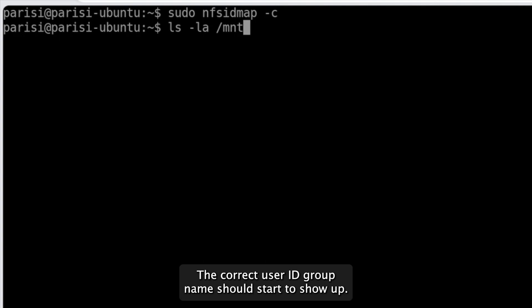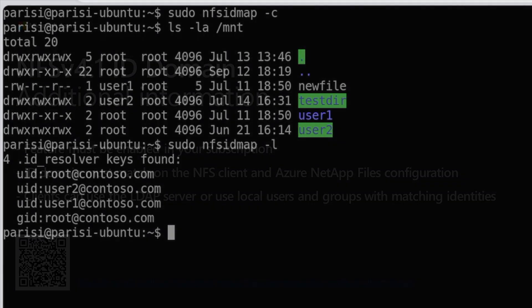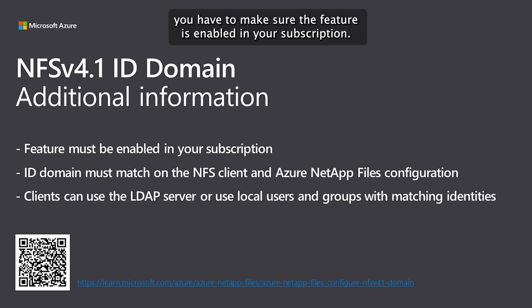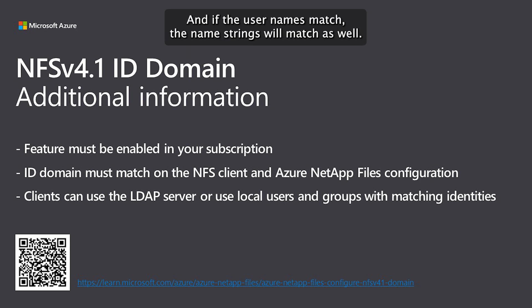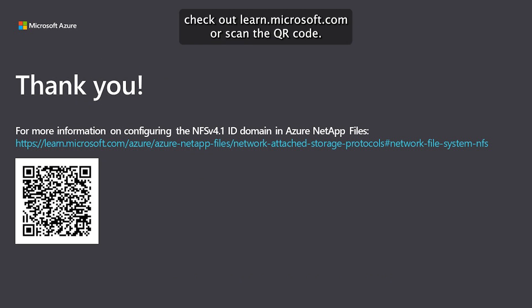The correct user and group names should start to show up — it's that easy. As a recap, to use the NFSv4.1 ID domain feature in Azure NetApp Files, make sure the feature is enabled in your subscription. Then simply ensure the ID domains match on the clients and in Azure NetApp Files — if the usernames match, the name strings will match as well. To learn more about NFSv4.1 or Azure NetApp Files, check out learn.microsoft.com or scan the QR code. Thanks for watching!